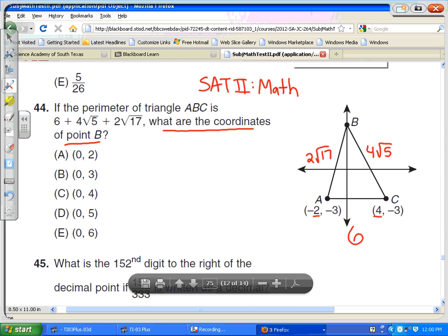So if we find the distance from point A to point B, that's 2√17, which is the same thing as √68, 4 times 17. And so the coordinates here would be (0, y) because we know the x value is 0.